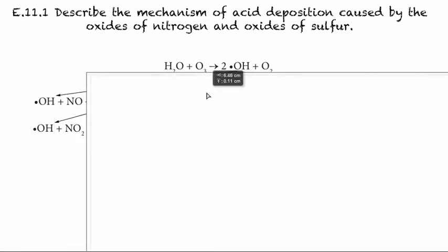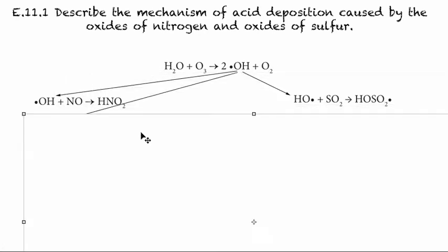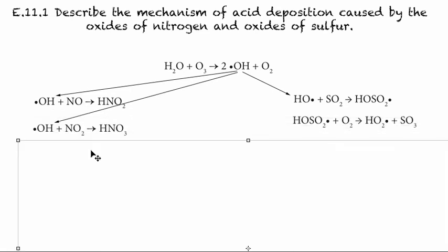So what happens with those free radicals is if they encounter nitrogen monoxide, then it can create HNO2, and that can make us nitrous acid. And if it reacts with NO2, then that can give us nitric acid. So those are both acids that can cause acid deposition.